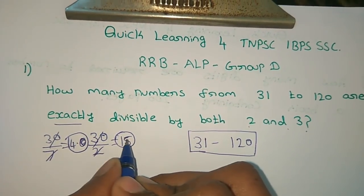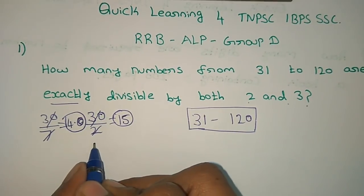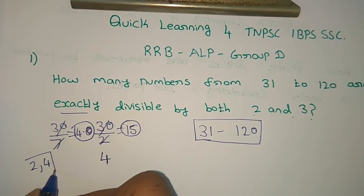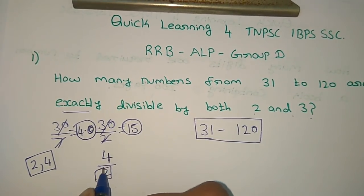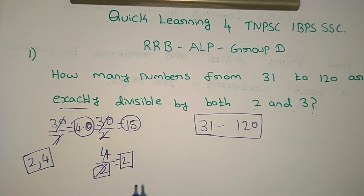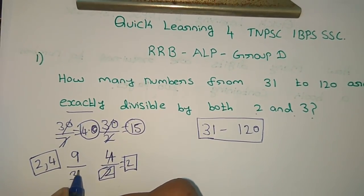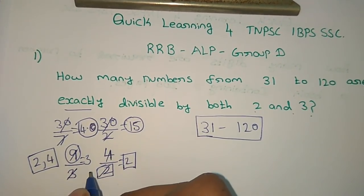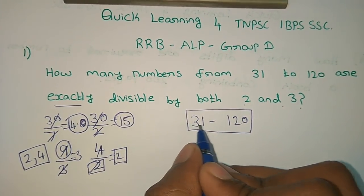So we use this method: we divide the range by 6 to find multiples. We take the numbers and divide to find how many multiples of 6 fall between 31 and 120. We get the sum of the numbers divided by 6, which is around 9 and 30.